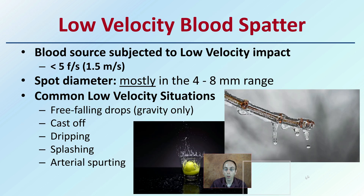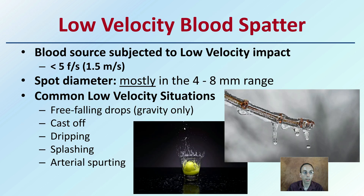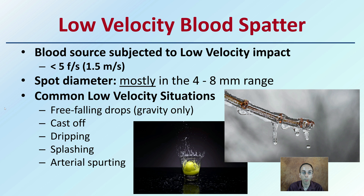For low velocity, spot diameters are mostly in the 4 to 8 millimeter range. Common low velocity situations include free falling drops due to gravity only, cast off, dripping, splashing, or arterial spurting — all of which fall under the classification of low velocity blood spatter.